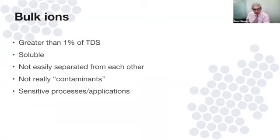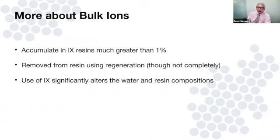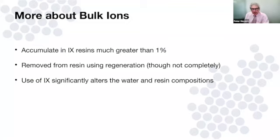On the anion side, the most common bulk ions are alkalinity/bicarbonates, chloride, sulfate, and nitrate. Silica is not on this list because silica is not ionized at neutral pH and therefore is not an ion. Even though these bulk ions aren't poisonous, we still need to remove them for sensitive processes like semiconductor manufacturing, boiler feed, and drinking water.